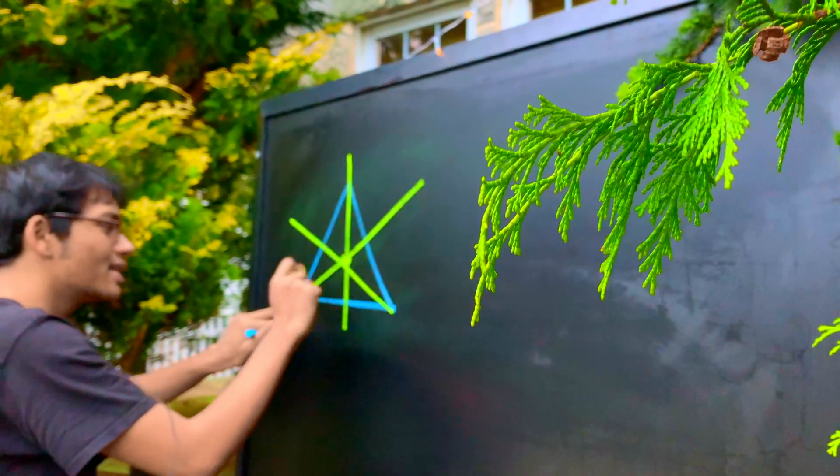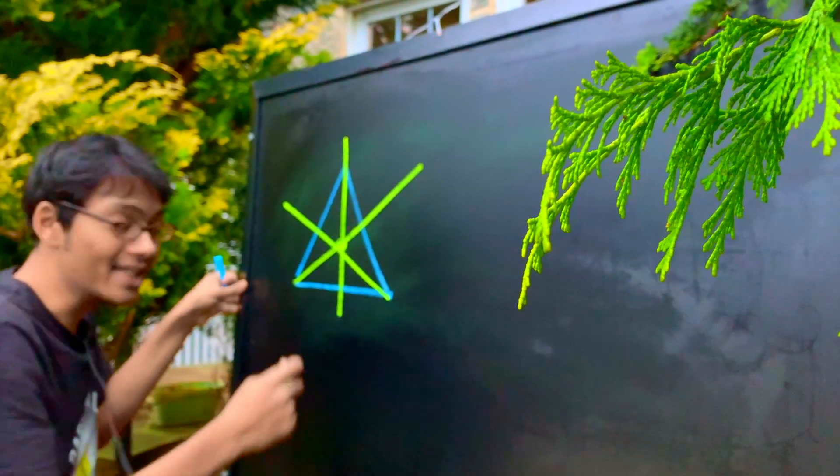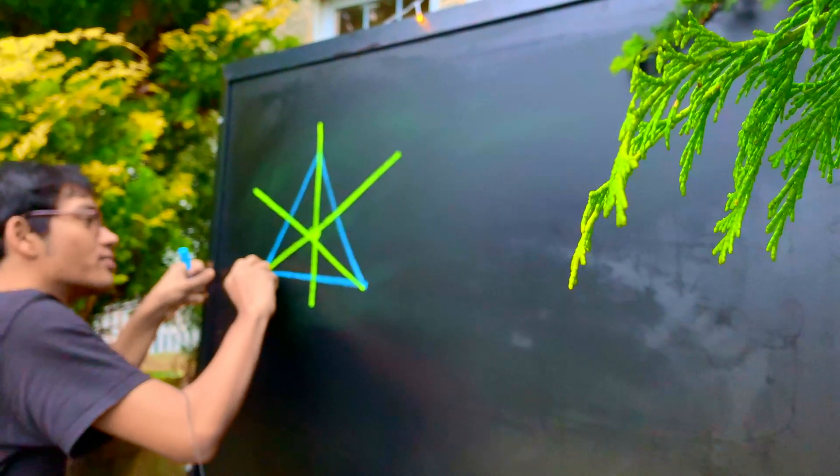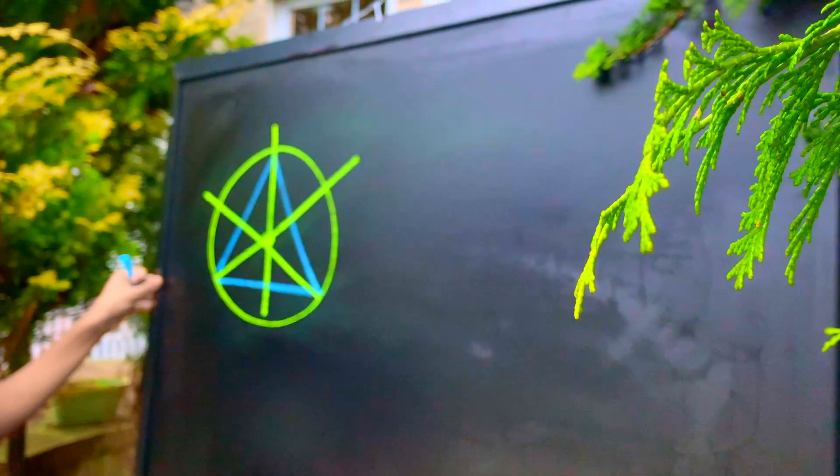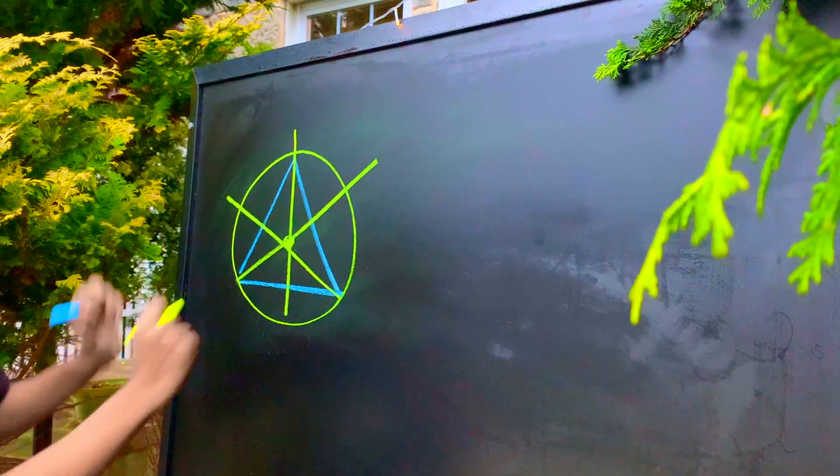Now we can use this segment as the radius of our circle, of our circumcircle rather, and draw the circle that encompasses our equilateral triangle. So here's our circumcircle.